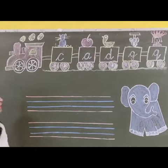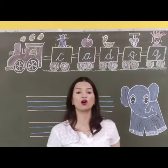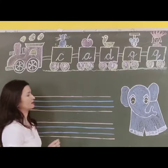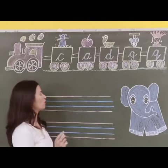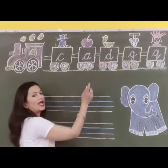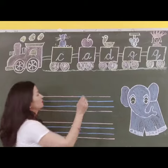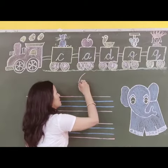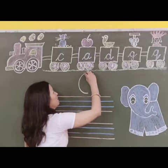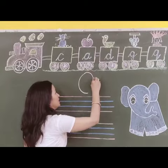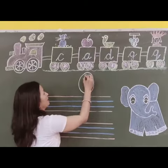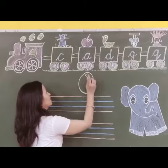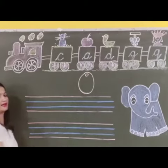Now teacher is going to draw a picture. E for egg. You have to also draw the picture of egg. Draw an oval shape like this, and draw a circle inside it. This is an egg.